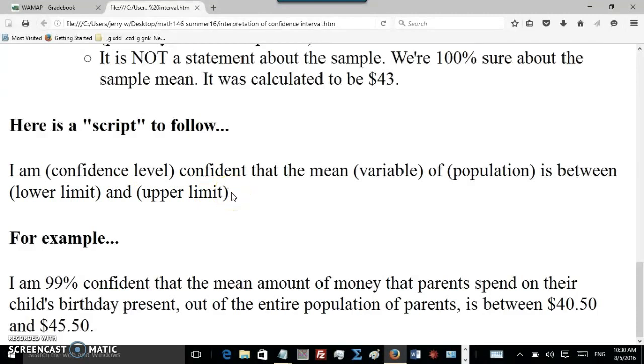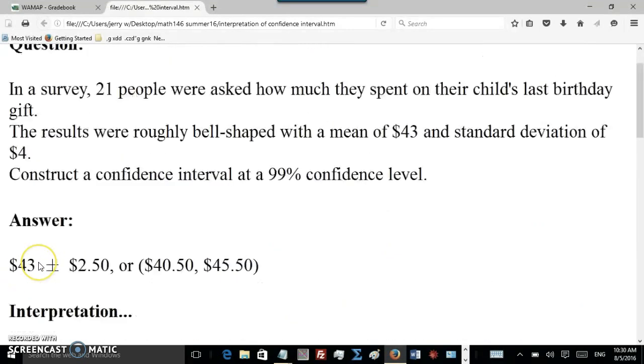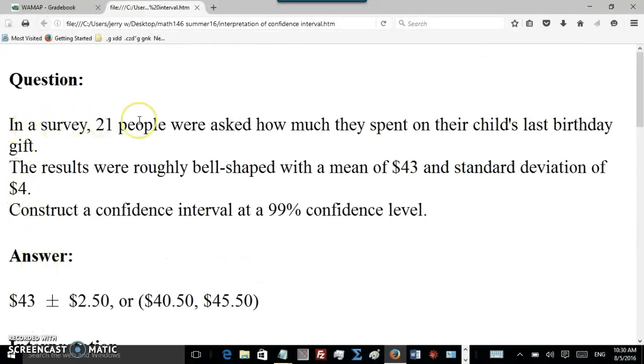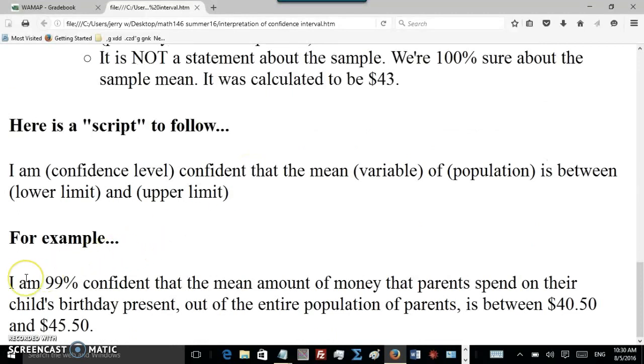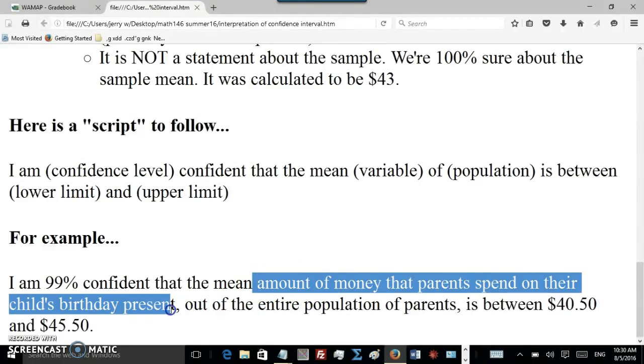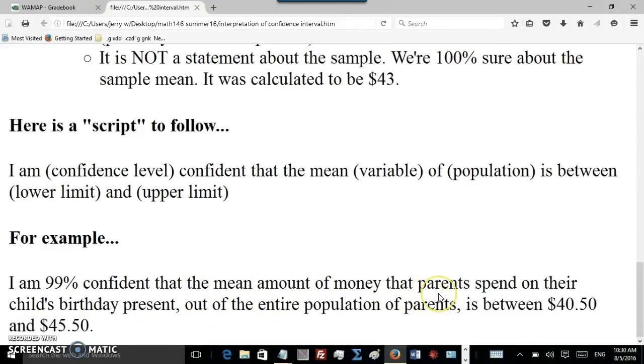For example, here's how I would say the confidence interval for this question right here about the 21 people who were asked about the child's birthday. I would say I'm 99% confident that the mean amount of money that parents spend on their child's birthday present, so that's the variable there, the amount of money spent on the birthday present, out of the entire population of parents is between $40.50 and $45.50.